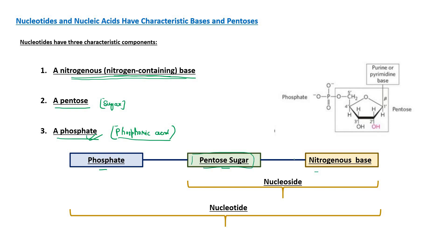The pentose sugar is the central component to which both the nitrogenous base and the phosphate are attached. The combination of pentose sugar and nitrogenous base is called a nucleoside. When a phosphate group is attached to a nucleoside, it becomes a nucleotide. So a nucleoside has two components — nitrogenous base and pentose sugar — while a nucleotide has three: nitrogenous base, pentose sugar, and phosphate.